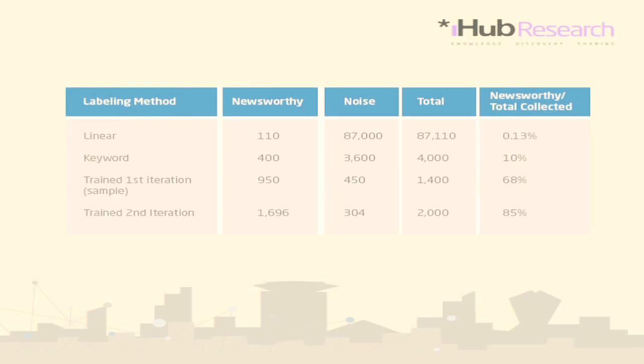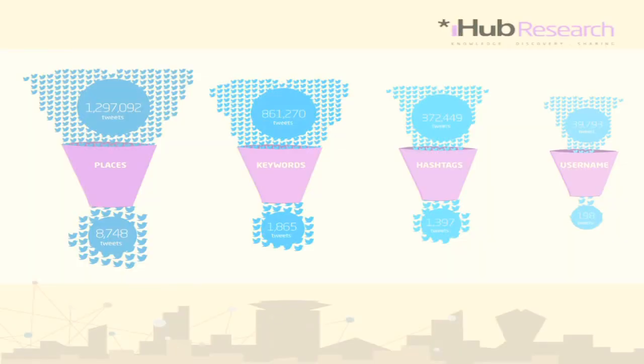As you can see, we did a comparison. If you do it manually, you're able to get around 10% of the data. If you use keywords, you're able to capture about 10% of the news or the events. But when we use the algorithms, it kicks up — from about 68%, then it jumped to 85%. This also enables us to break down the data into hashtags, usernames, and names of places.